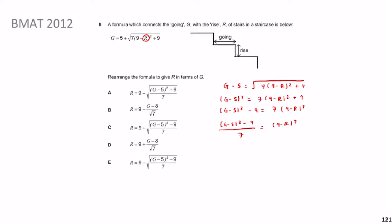Then get rid of the squared by taking the square root, giving the square root of (G minus 5, all squared, minus 9, over 7) equals 9 minus R. Then putting the minus R to the other side, it becomes R, and I keep the square root on the other side, so R equals 9 minus the square root of (G minus 5, all squared, minus 9, over 7).